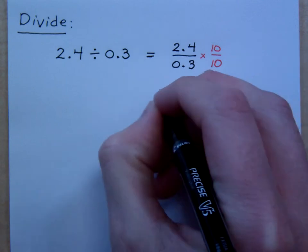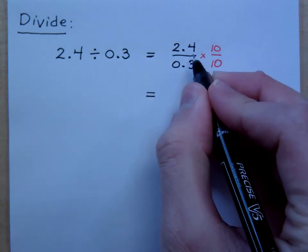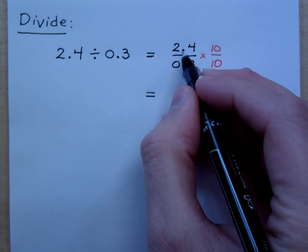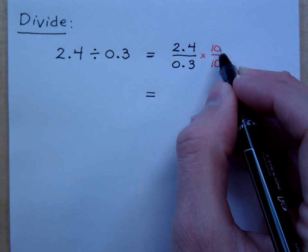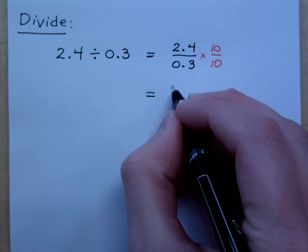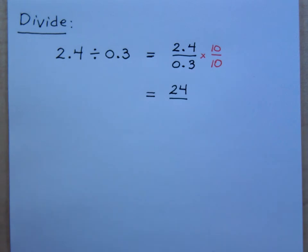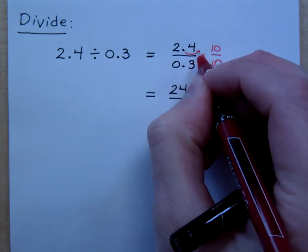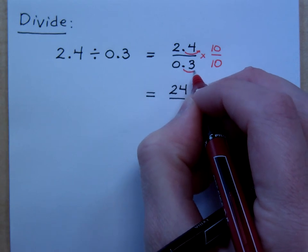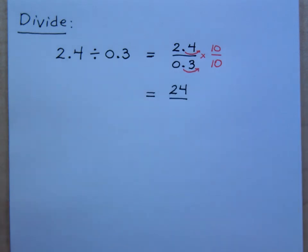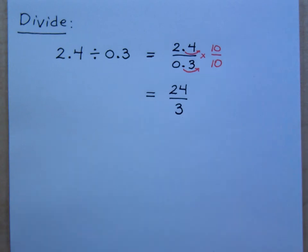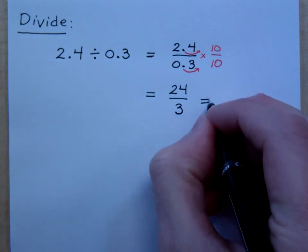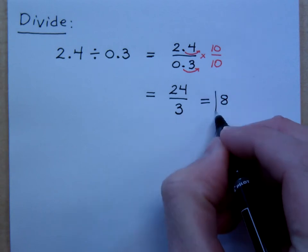But notice what happens here when I do this. If I multiply a decimal times 10, that just moves the decimal one spot to the right. For every 0 that you have for that power of 10, that's how many places you would move the decimal. So this guy would become 24, because by multiplying times 10, it moves that decimal one spot to the right. Multiplying 0.3 times 10 would also move that one spot to the right. So 2.4 divided by 0.3 is really the same as 24 divided by 3. So the answer here would just be 8.